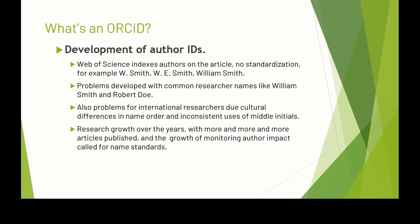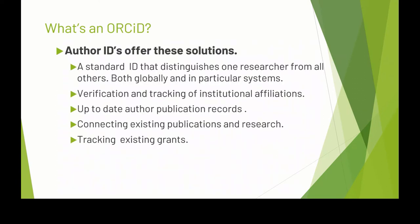Librarians and publishers particularly moved in that direction. Author IDs offer the solution of a standard ID that distinguishes one researcher from all others, both globally and in particular systems. The ORCID is a specific system that's researcher-agnostic and worldwide, while the other IDs are based on a particular system such as Scopus, Web of Science, or Google Scholar. They allow for verification and tracking of your institutional affiliations, up-to-date author publication records that can automatically update when publications are added to databases, connection of existing publications and research, tracking of grants, and building collaborations with other researchers.